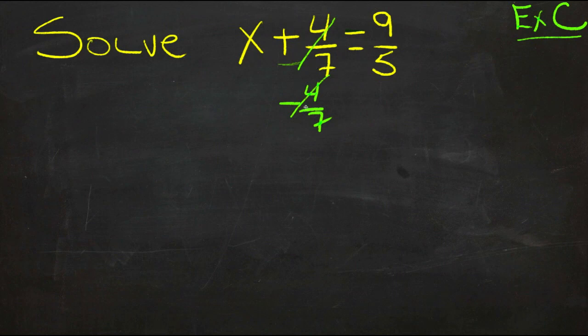But if we subtracted 4/7 from this side of the equal sign, then we need to subtract 4/7 from this side of the equal sign, so that our statement of things that are the same will still be the same.